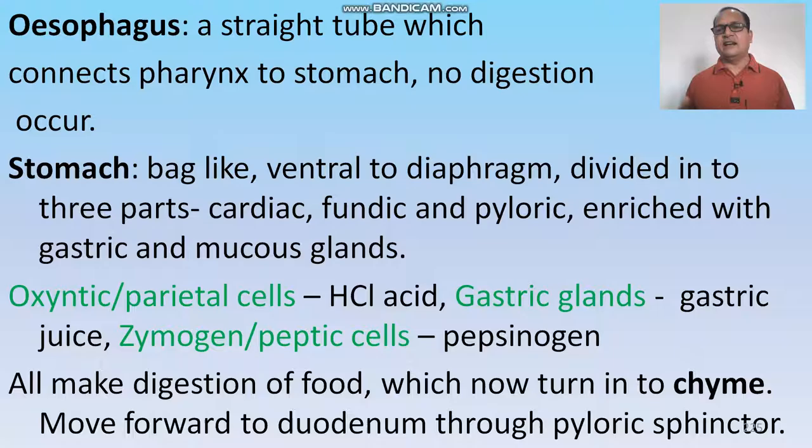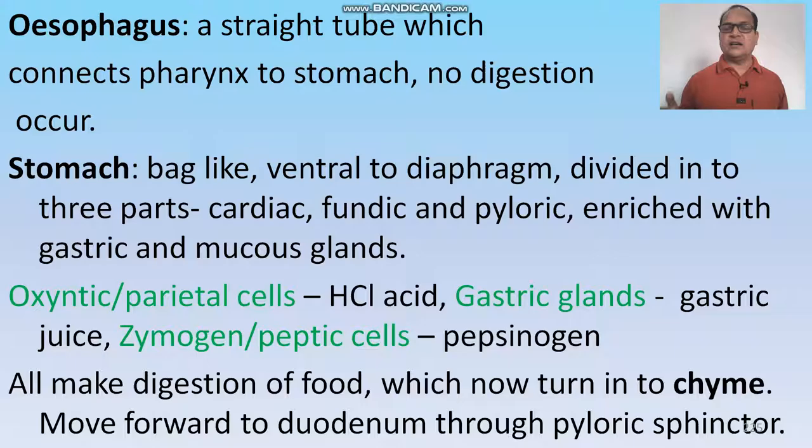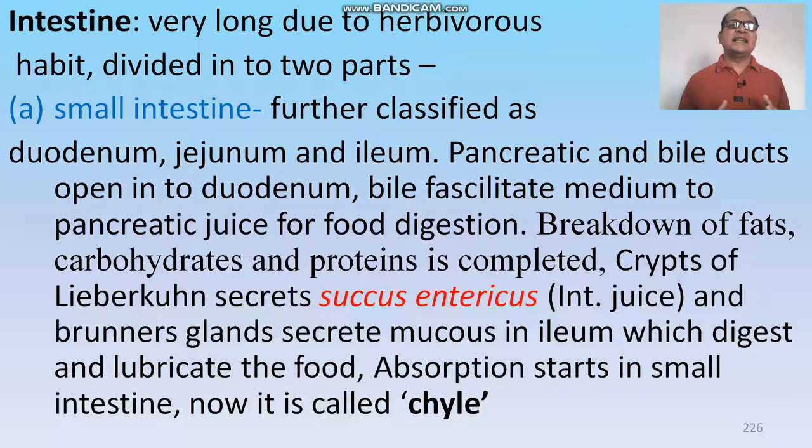The stomach is a bag-like structure, ventral to the diaphragm, divided into three regions: cardiac, fundic, and pyloric, enriched with gastric and mucous glands. Oxyntic cells secrete HCl, gastric glands secrete gastric juice, and zymogen glands secrete pepsinogen — all aiding digestion. Food enters as chyme and moves forward to the duodenum through the pyloric sphincter.